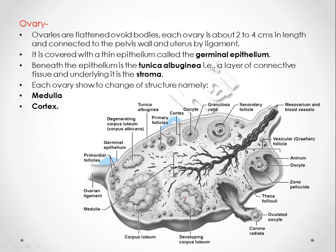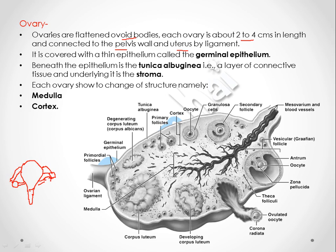Now we are going to discuss the ovaries. The ovaries are flattened ovoid bodies, about two to four centimeters in length, connected to the pelvic wall and uterus by a ligament. As shown in the diagram, the uterus opens into the cervix, which opens into the vagina. This is the fallopian tube, and this is the ovary, connected to the pelvic wall and uterus by a ligament which supports the ovary.